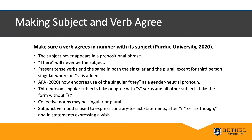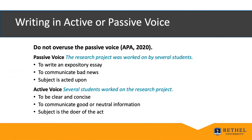Collective nouns may be singular or plural, and almost all verbs are in the indicative mood used to make statements of fact. However, the subjunctive mood is used to express contrary-to-fact statements after 'if' or 'as though,' and in statements expressing a wish. Both the passive and active voice are permitted in APA style, but many writers overuse the passive voice. Use the passive voice for expository essays and to communicate bad news — for example, 'the research project was worked on by several students.' It's better to use the active voice for direct, clear, concise sentences: 'Several students worked on the research project.'